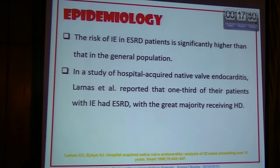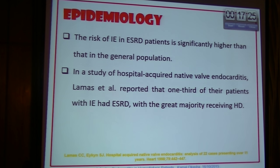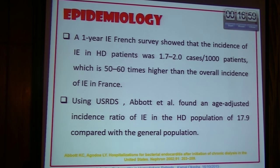Regarding the epidemiology of infective endocarditis among hemodialysis and end-stage renal disease patients, the risk is significantly higher than in the general population. One study of hospital-acquired native valve endocarditis reported that one-third of their patients had end-stage renal disease, with the majority receiving hemodialysis. A French one-year study showed the incidence of infective endocarditis among hemodialysis patients was 1.722 cases per 1,000 patients, which is almost 60 times higher than the general population.